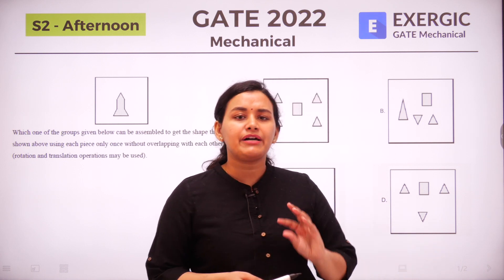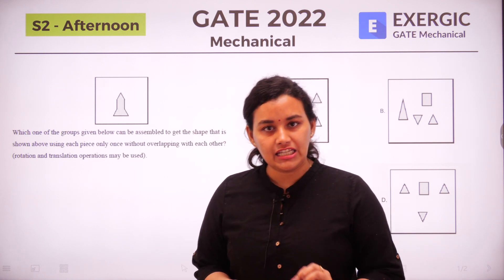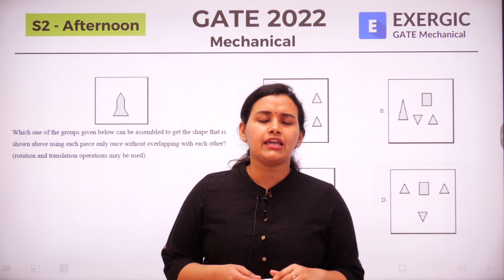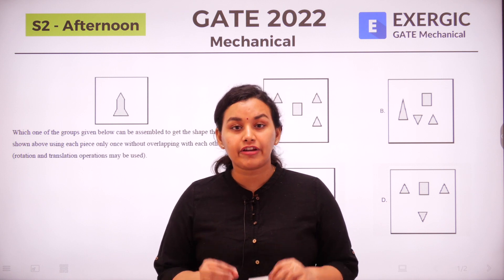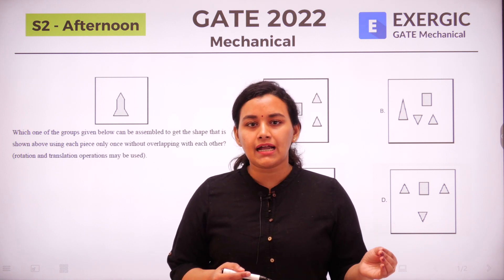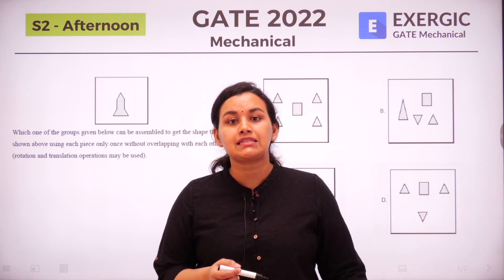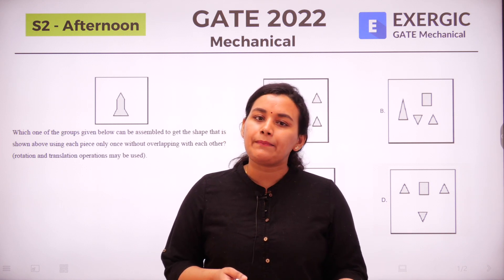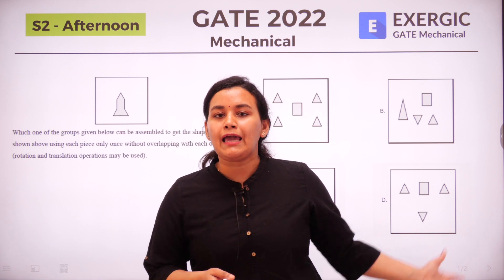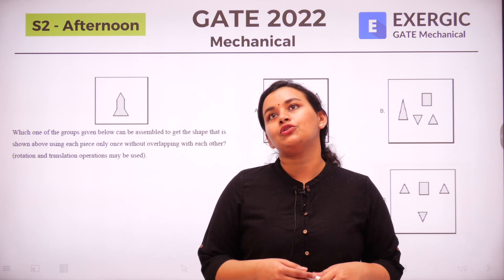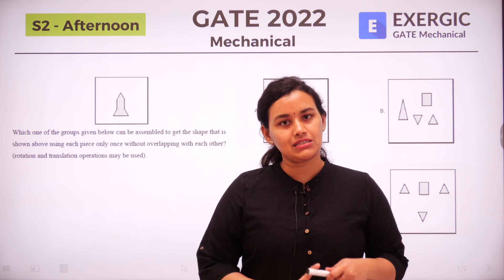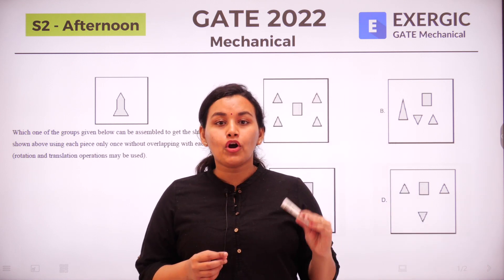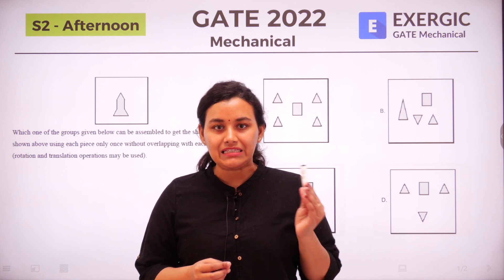Now this question is very simple, very easy. Sometimes assembly questions can be a little tricky. All spatial aptitude questions can be a little tricky, but compared to those standards this question is very simple. So what makes it debatable? The fact that it is an MCQ question means you can have only one correct answer choice, whereas if we go through the options we can see that there is more than one option that is correct.